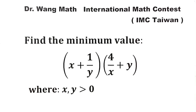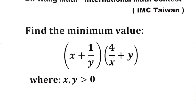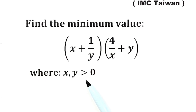In this video, we'll be solving a question from the Taiwan International Mathematics Contest to find the minimum value of the expression x plus 1 over y times 4 over x plus y, where both x and y are bigger than zero.